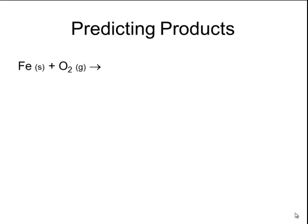If I have iron metal and I burn that iron metal in the presence of oxygen gas, because I have two single elements, those single elements are likely to combine together to make a more complex one called iron oxide. That is called a synthesis reaction.